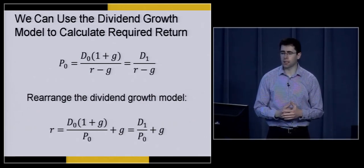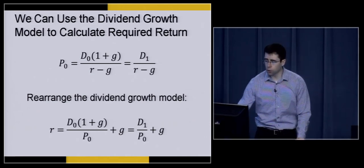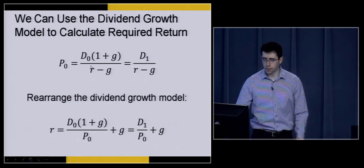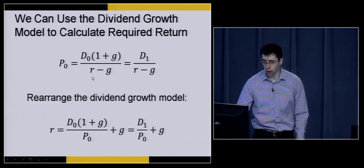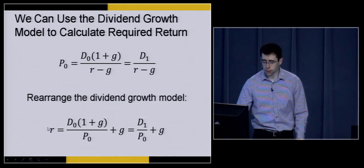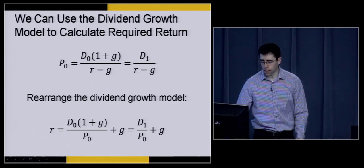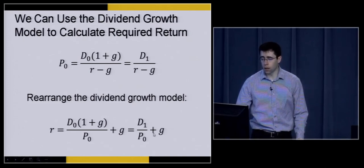We can predict returns by rearranging the dividend growth model. Our price is P₀ = D0 × (1 + G) ÷ (R − G). Solving for R, we get: R = D1 ÷ P₀ + G. If we know our expected dividend next year and the current stock price, we can estimate our expected return on the stock using this rearranged dividend growth model.